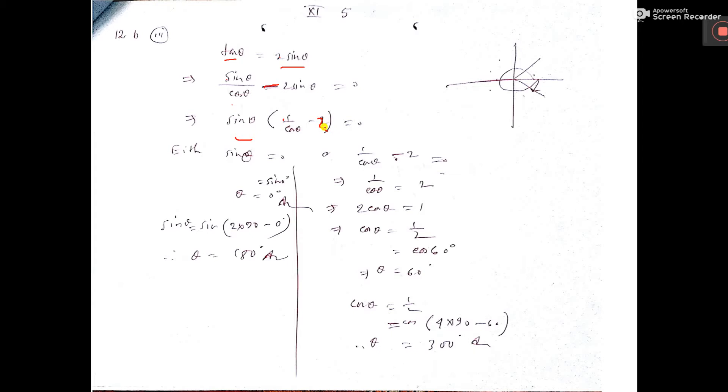This gives two cases: either sin θ = 0, or 1/cos θ - 2 = 0. From the second case, 1/cos θ = 2, which gives 2 cos θ = 1.